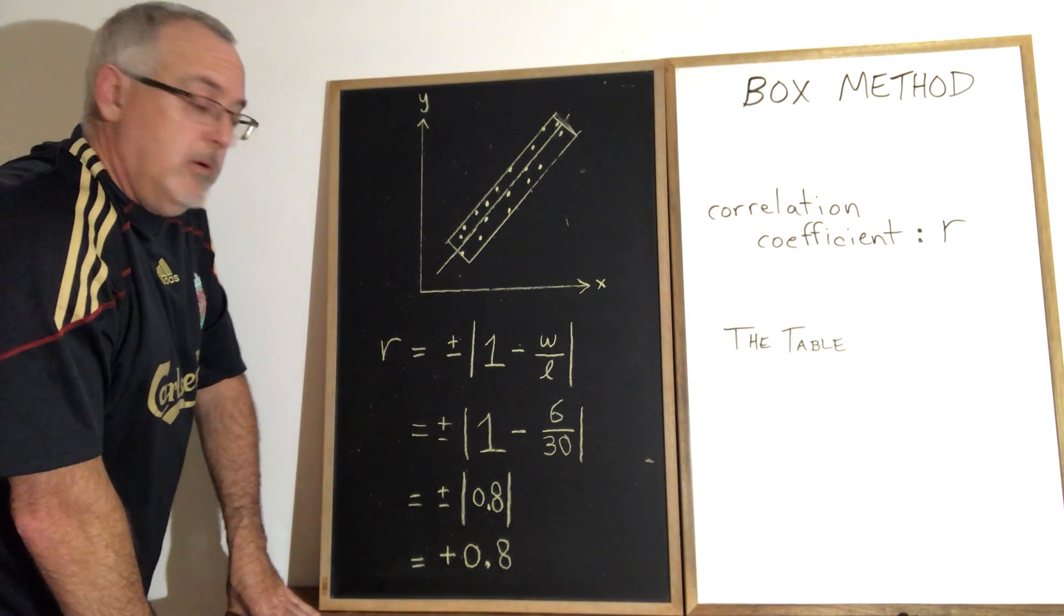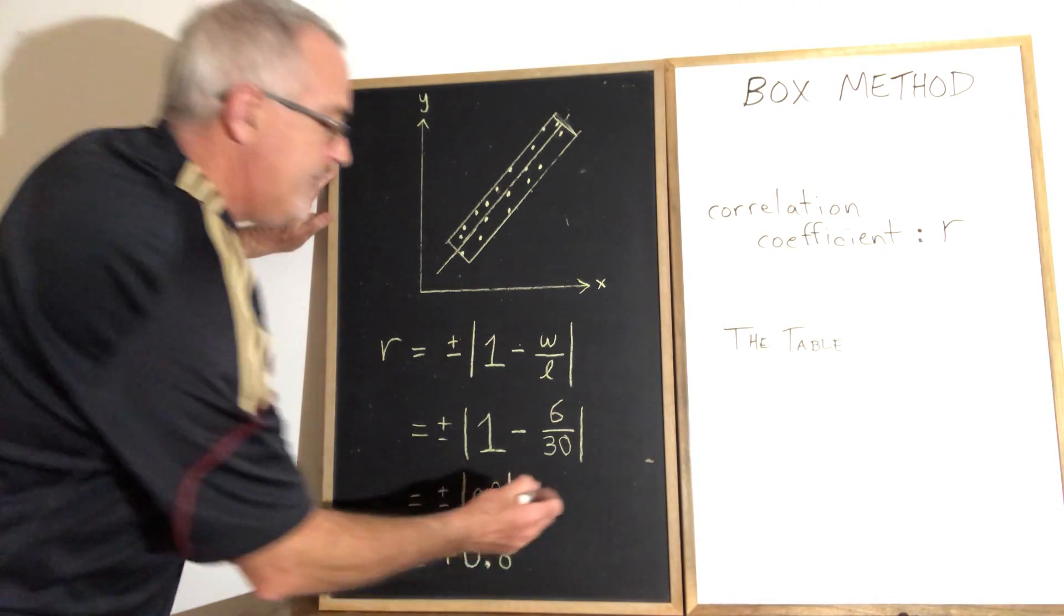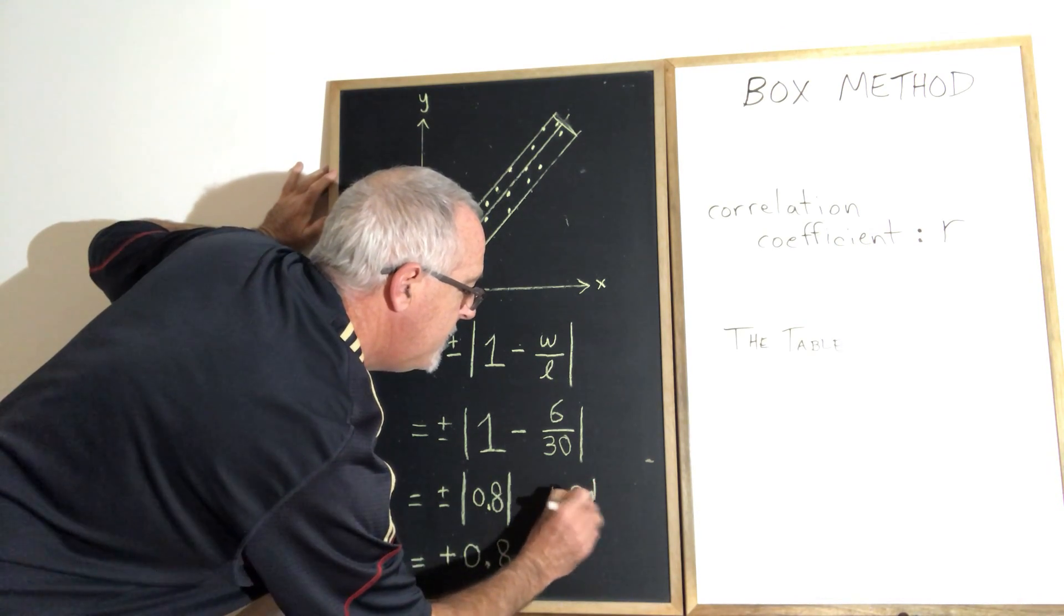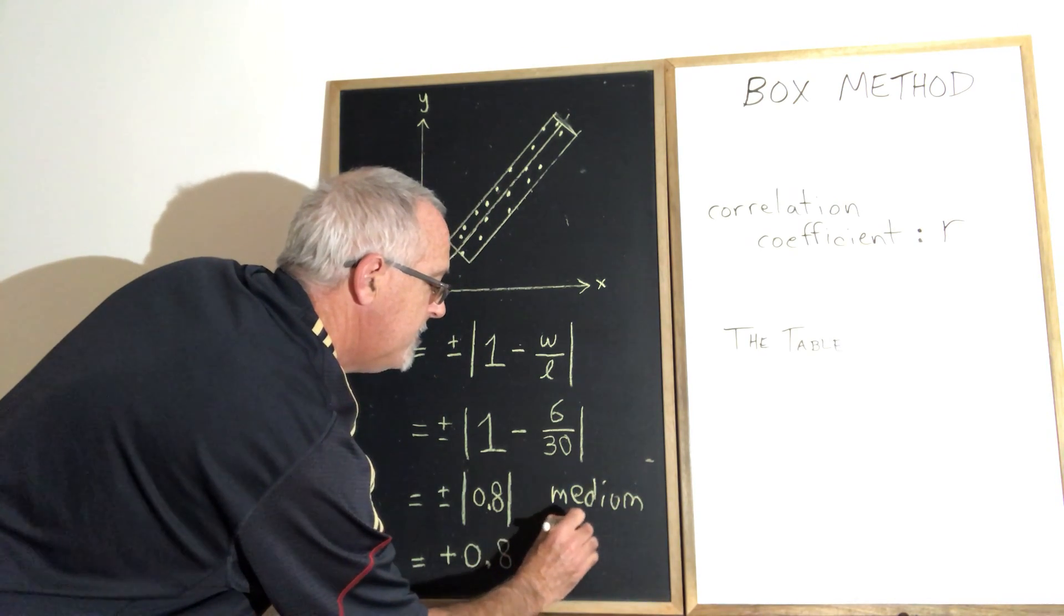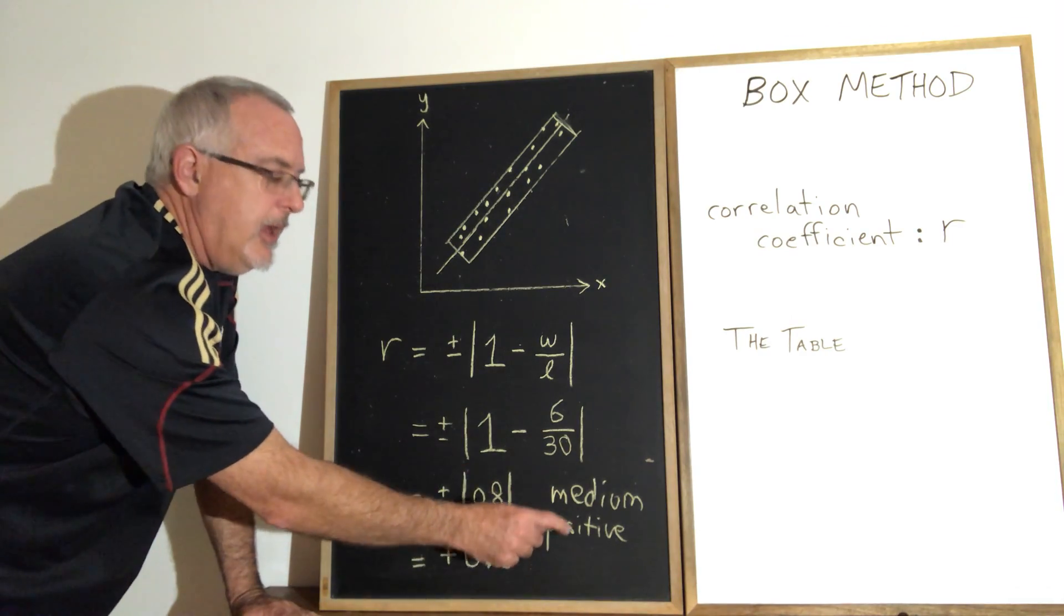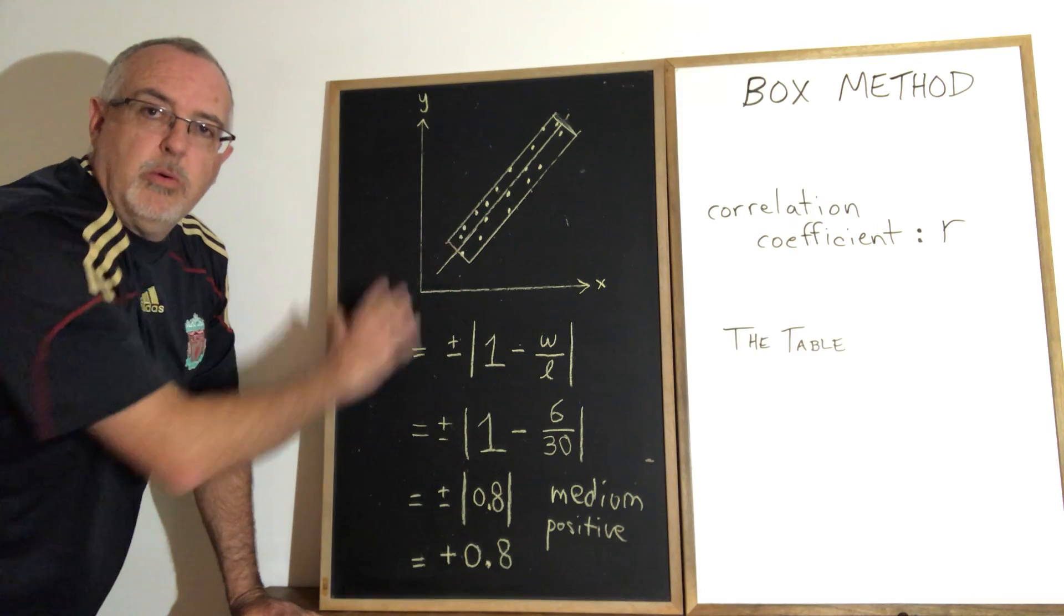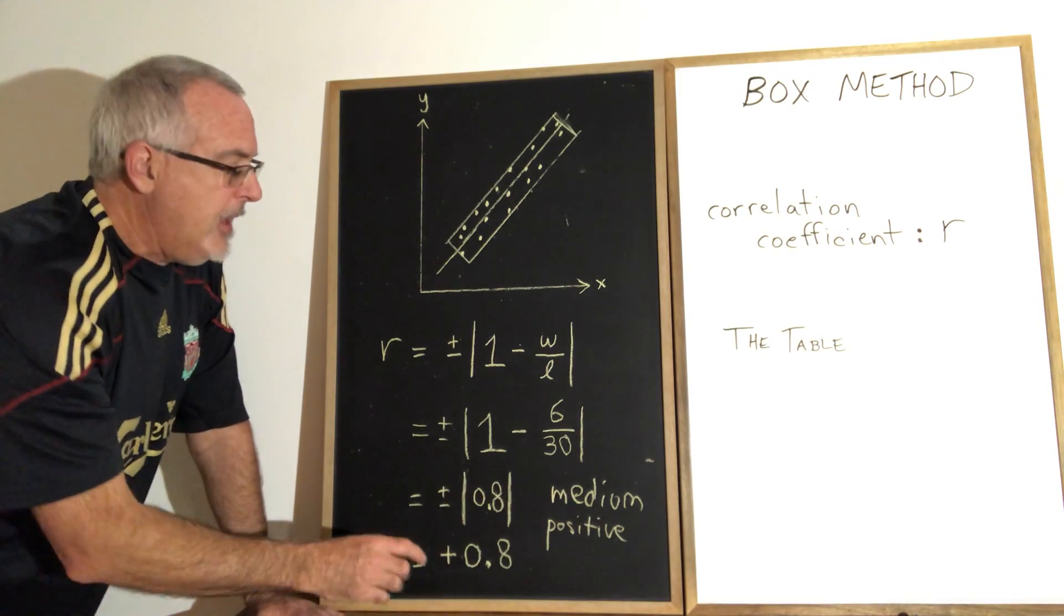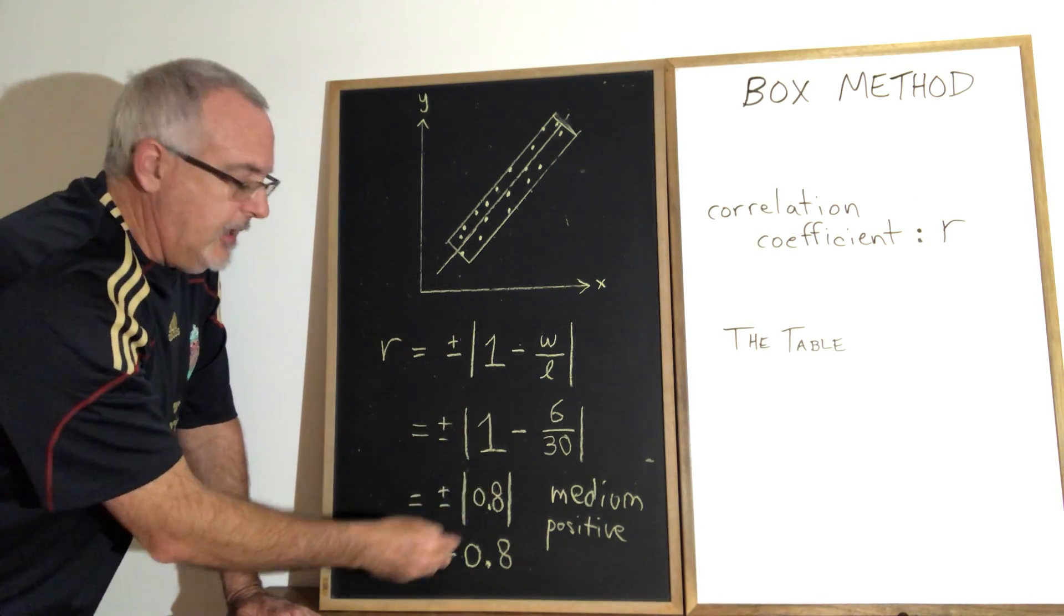All that's left to do now is to judge the r-value, to judge the correlation. 0.8 is a medium and positive correlation. Now it's important to say that it's positive even though you might think that it's obvious. You don't want to put the person who's correcting your work in a position where they have to decide whether it's positive or negative. So you say positive. And if the line of best fit had formed a negative slope, then we would be saying it's negative 0.8.